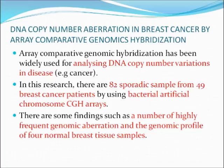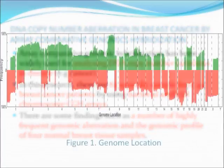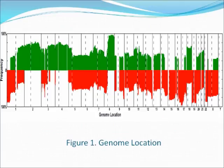In one study, researchers investigated 82 sporadic samples from 49 breast cancer patients using a 1MB resolution Bacterial Artificial Chromosome CGH array. A number of highly frequent genomic aberrations were discovered, which may act as drivers of tumor progression. The genomic profiles of 4 normal breast tissue samples were also found to have genomic aberrations recurring with high frequency in primary tumors, with important implications for clinical therapy. The figure shows recurrent genomic abnormalities in 49 primary breast tumor samples revealed by array CGH, with frequencies of genome copy number gains and losses plotted as a function of genome location. Green and red columns indicate frequency of tumors showing copy number increase and decrease respectively.